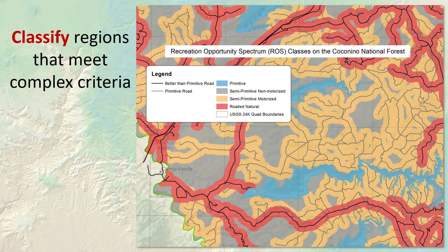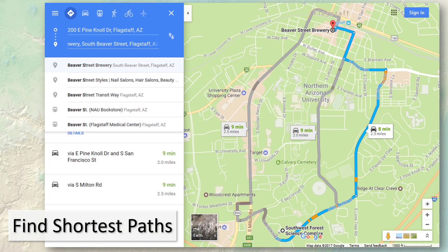You can go further than just selecting data in ArcGIS — you can actually create new datasets that classify the landscape into different criteria. This is an example called the recreation opportunity spectrum. Here's another example of finding areas by complex criterion.